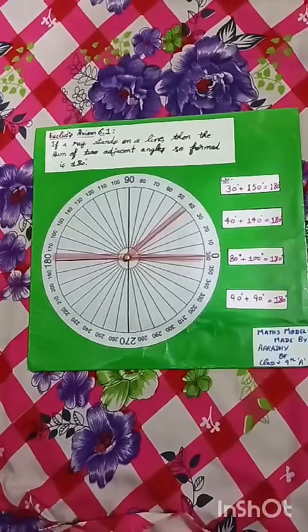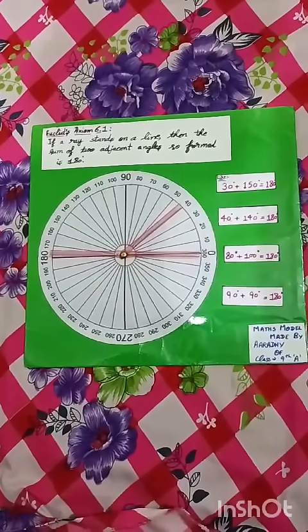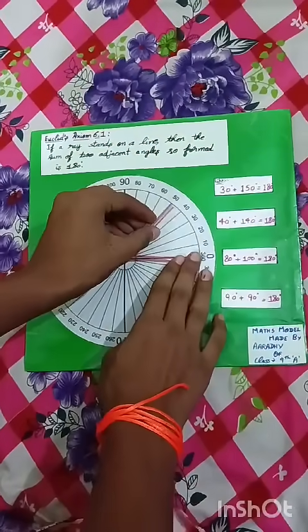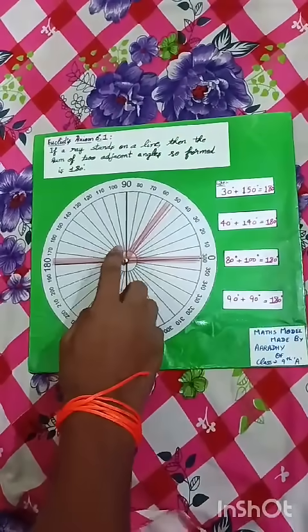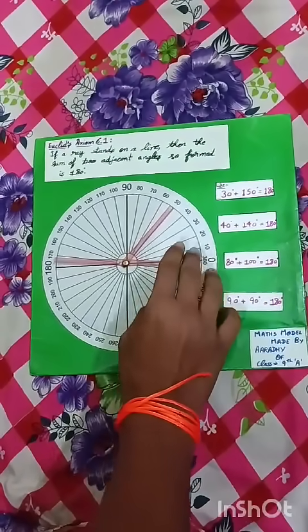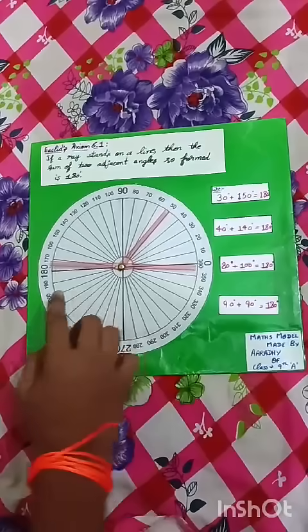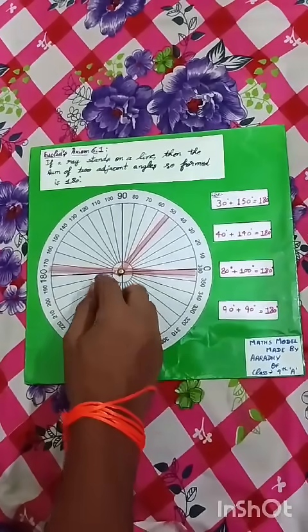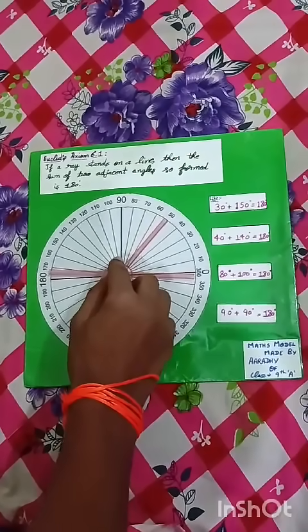This axiom is also used to find the measure of angles. If I put the straw on 50 degrees, to find the other angle I subtract 50 degrees from 180 degrees, which equals 130 degrees. So the measure of this angle is 130 degrees.